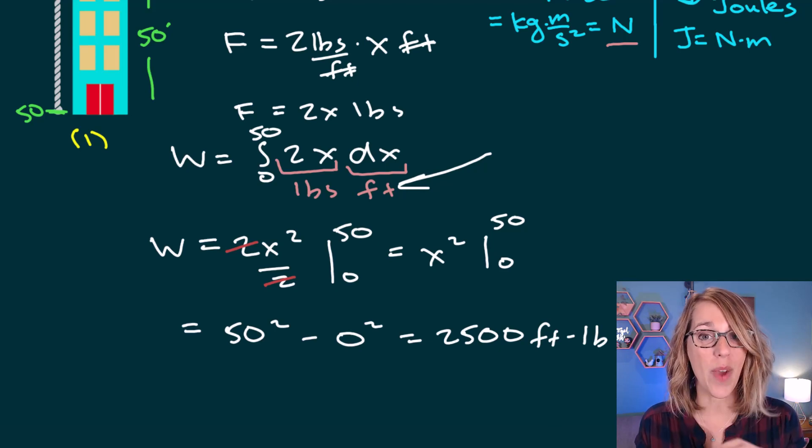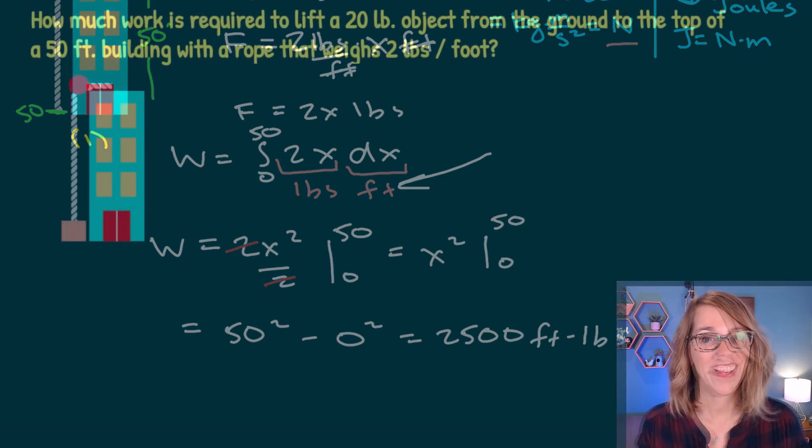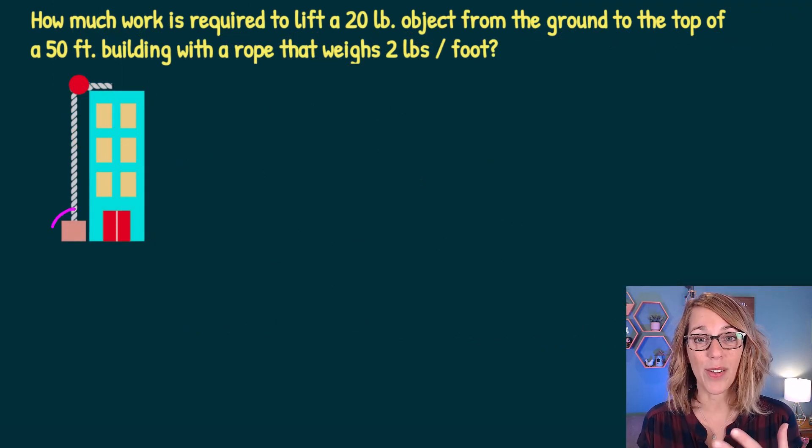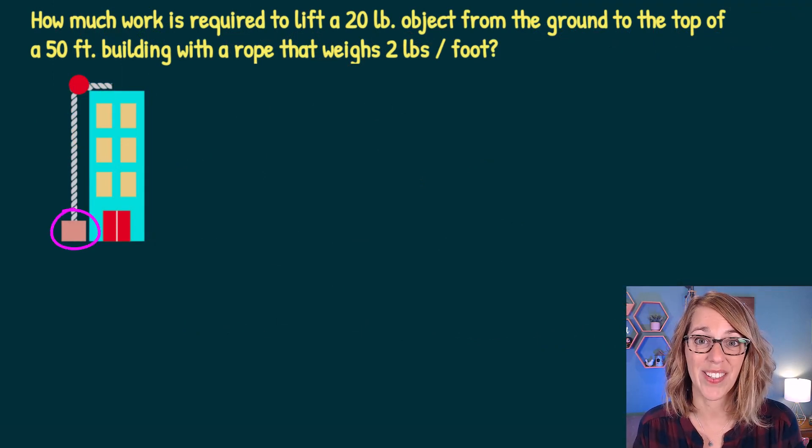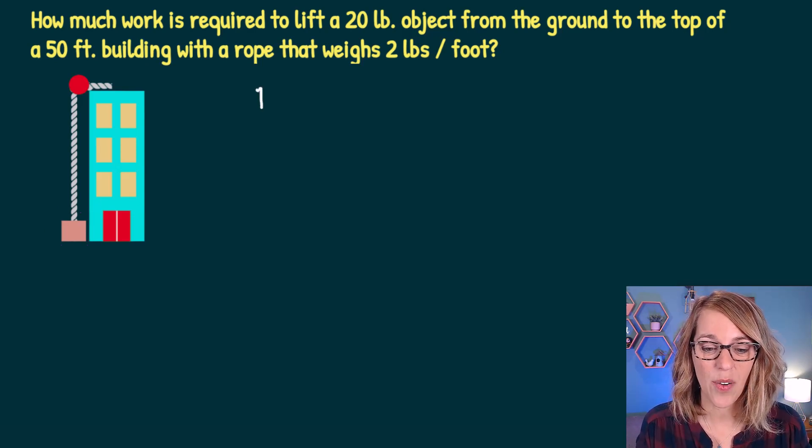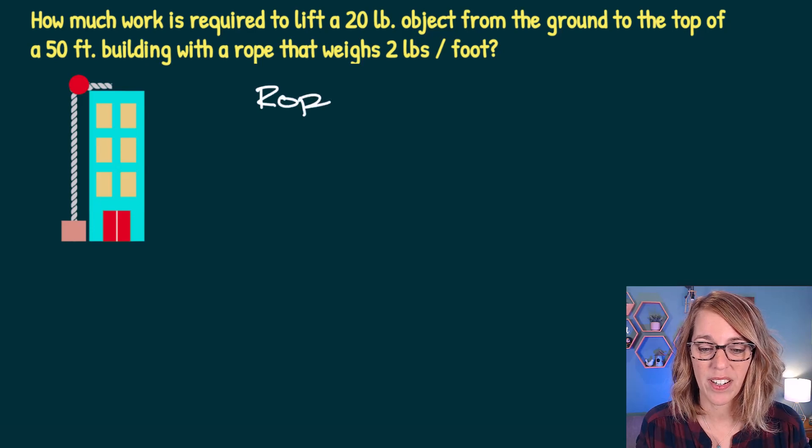Next, we're going to add the weight to the bottom. In this example, I've got the rope that I'm lifting to the top of the building, but I've also added this weight at the bottom. So I really want to think about this work problem as two separate pieces. So I've got the rope plus the box.